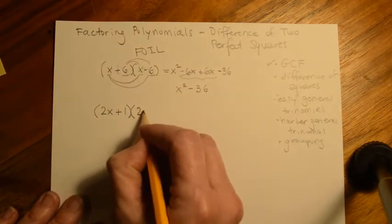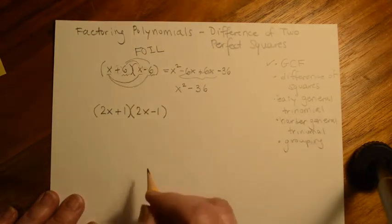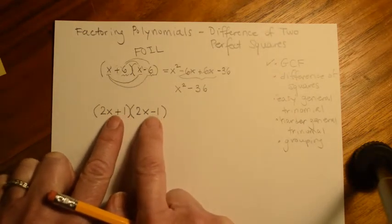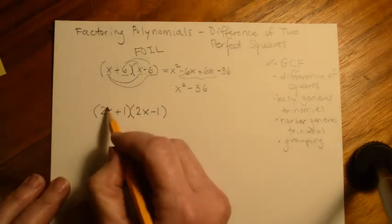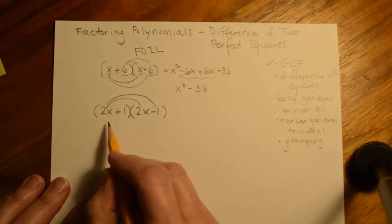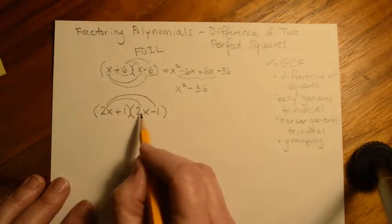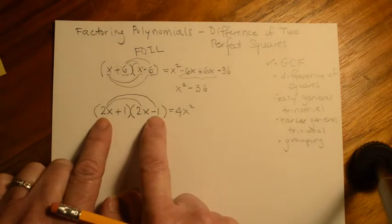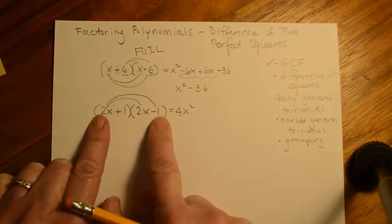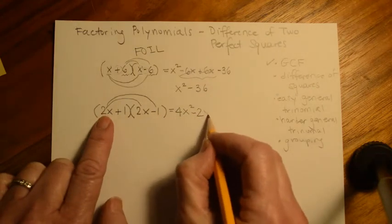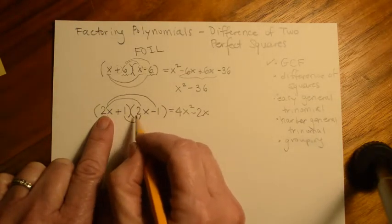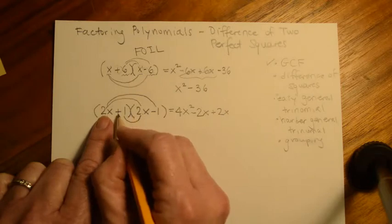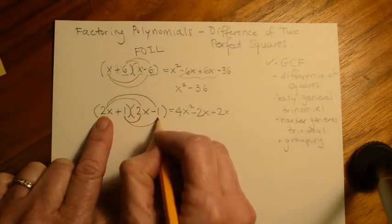Let's do another one: 2x plus 1 times 2x minus 1. Again, they're both binomials, both first terms are 2x, both second terms are 1, and the only difference is one's positive and one's negative. Distributing: 2x times 2x gives 4x squared. 2x times negative 1 gives negative 2x. 1 times 2x gives positive 2x. And 1 times negative 1 gives negative 1.